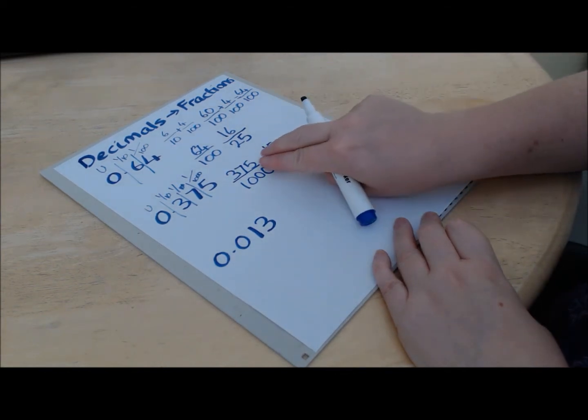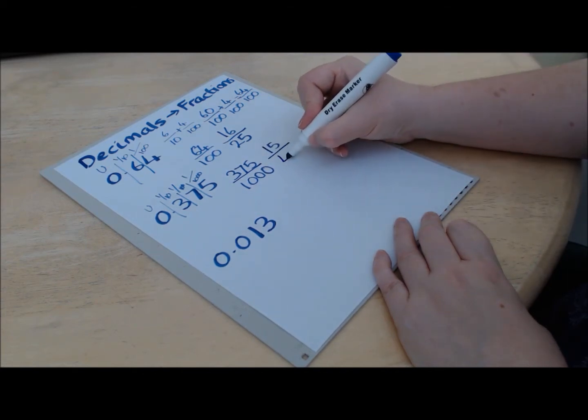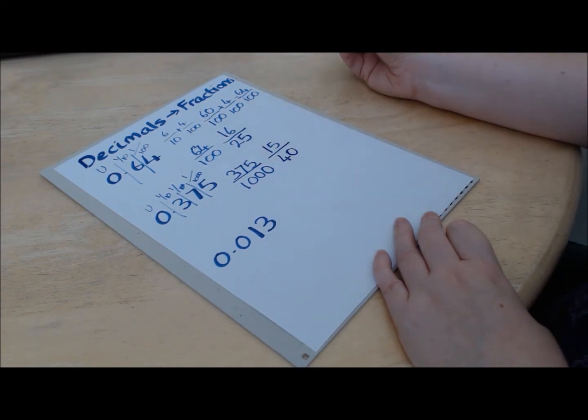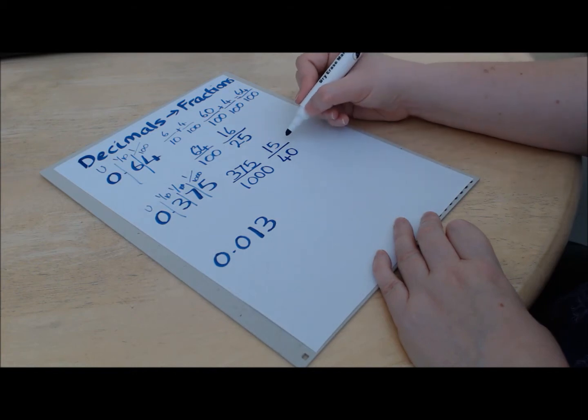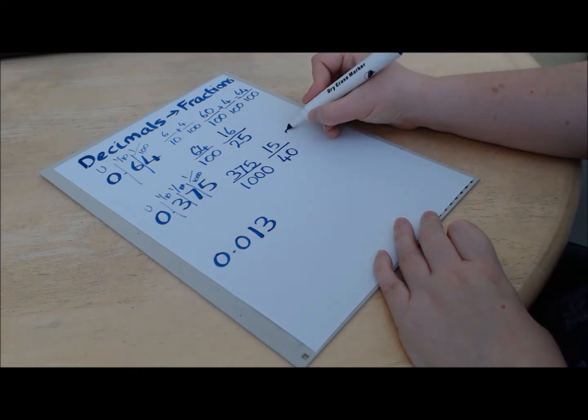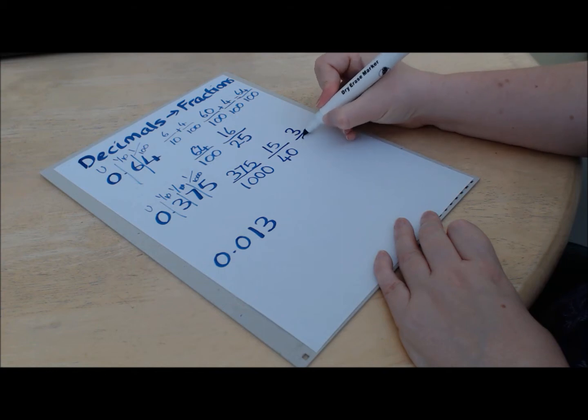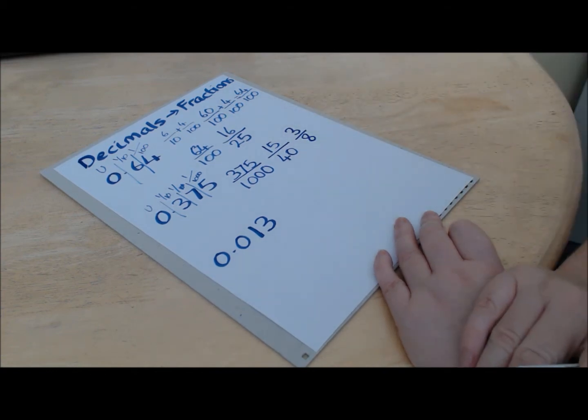And again, we have four in a hundred, so we have forty in a thousand. Now, we can divide by five again here to get to 3 over 8 as our final answer.